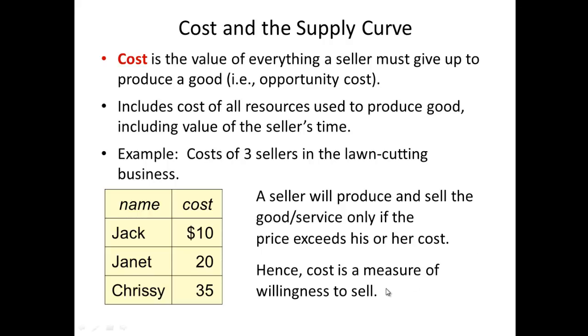In this segment we're going to take an example of three producer sellers. Jack, his cost is $10, Janet, her cost is $20 and Chrissy's cost is $35. Now we can make some inferences about what's at play relative to why Jack's costs are $10 as opposed to Chrissy's cost which is $35. There could be something called economies of scale at work here. But for right now we just know that Jack's cost is $10 as opposed to Janet's $20 and Chrissy's $35.